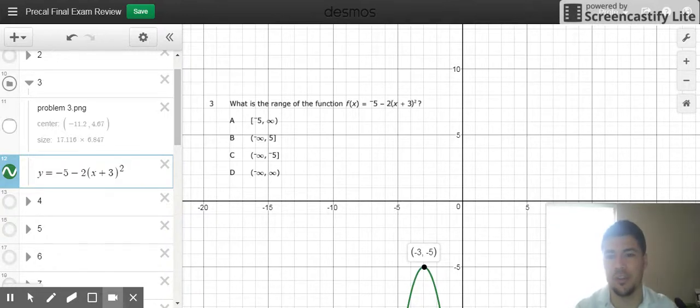It asked me for the range. Every single one of these options has a 5 or a negative 5, while d has negative infinity to positive infinity. As soon as I graph this...